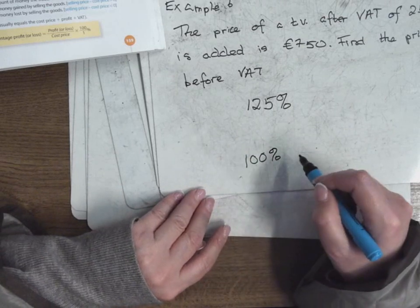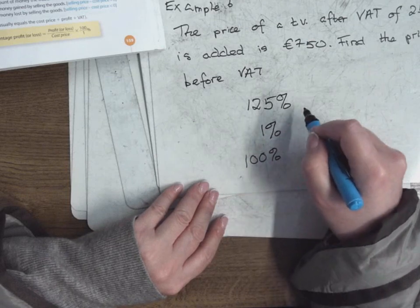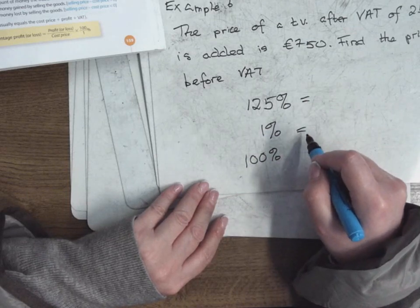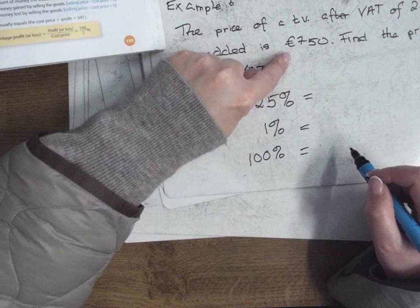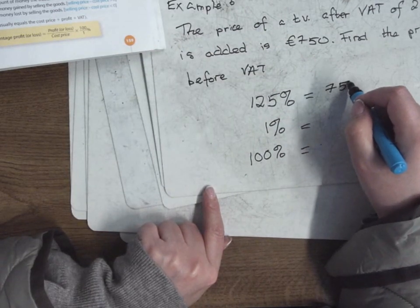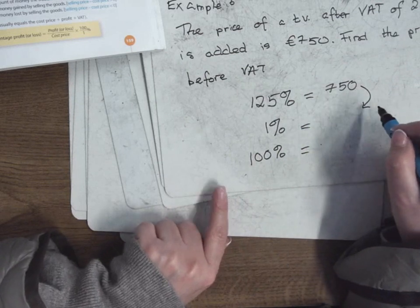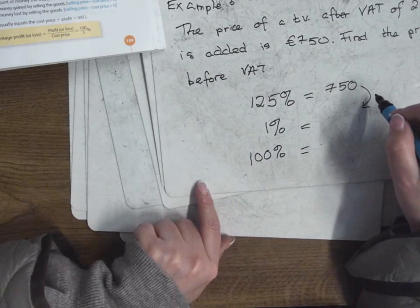What I do in the middle, what I do in the middle, go down to 1%. So 125 was the final bill, which was €750. Right? So I have to go down to 1. How do I go down to 1 from 125%? Divide by 125.